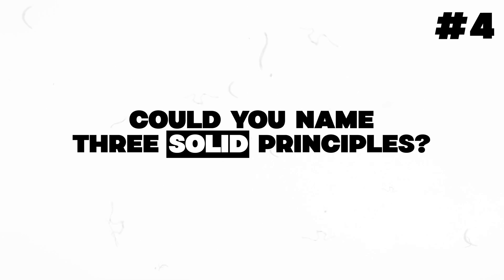A pretty standard question for a backend engineer: could you name the SOLID principles, and give an example of when you used one of them in backend code? S is for Single Responsibility, O for Open-Closed, L for Liskov Substitution, I for Interface Segregation, and D for Dependency Injection. I've used dependency injection a lot in the past to make code more testable. Rather than depending directly on something via an import, you provide it as an argument at runtime — either in the constructor of a class or as a function argument in JavaScript.